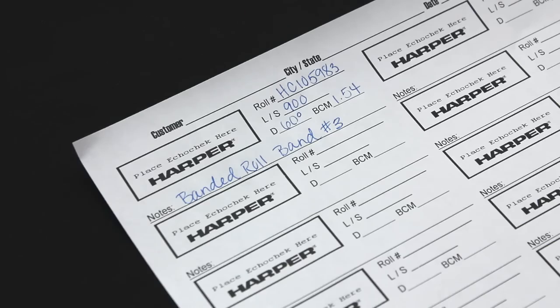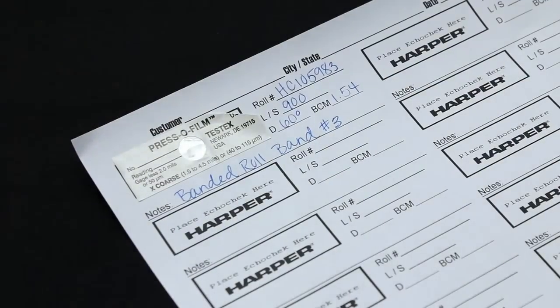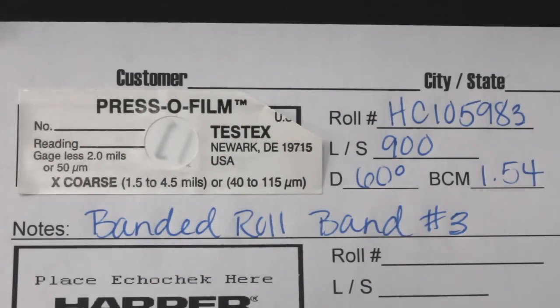Place the echo check on the echo check placement sheet in the designated outlined area. Indicate all information on the placement sheet.